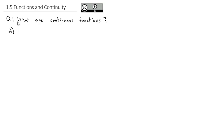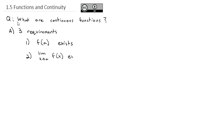Basically, the definition of a continuous function is a function that meets three requirements. The first is the function at our point, f of a, exists — so the function cannot be undefined. Second, the limit as x approaches a of the function exists. And the third, most important part, is that they are the same: f of a is equal to the limit as x approaches a of f of x.